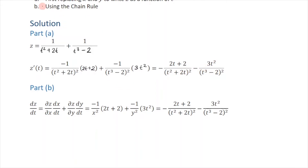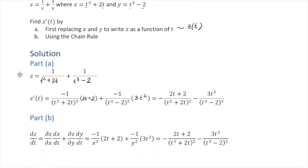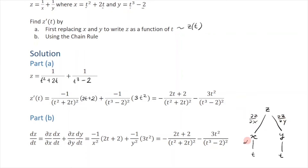In part B, using the chain rule: z is a function of x and y, and x and y are in turn functions of t. We label all the derivatives: partial z over partial x, partial z over partial y, dx/dt, and dy/dt — using regular derivatives since there is only one variable involved. Then we write out the products: dz/dx times dx/dt, plus dz/dy times dy/dt.